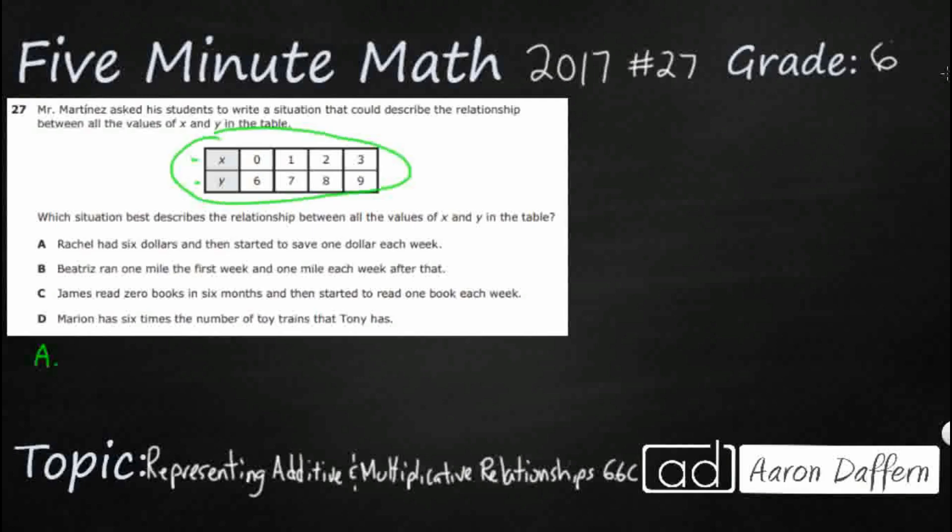So we have Rachel, she has $6, and then started to save $1 each week. So it looks like we're going to have two things, we're going to have our money, and then we're going to have our week. And we're not sure whether they're x or y, it doesn't really matter, we're just going to look at the values real quick.